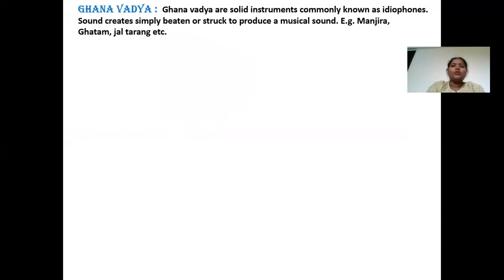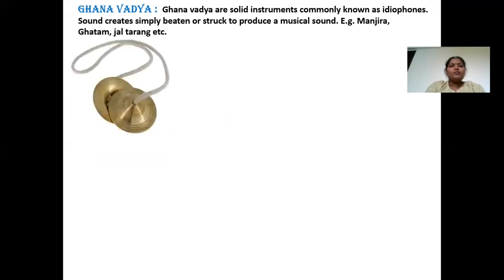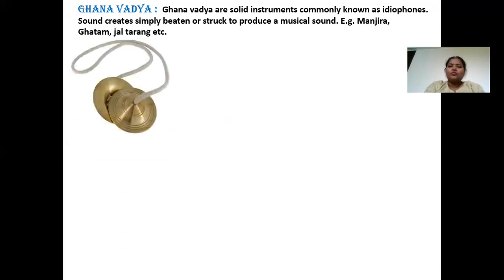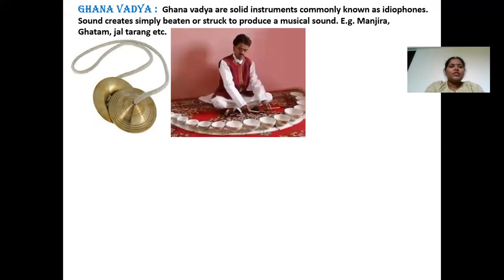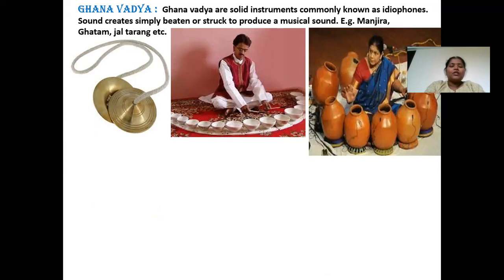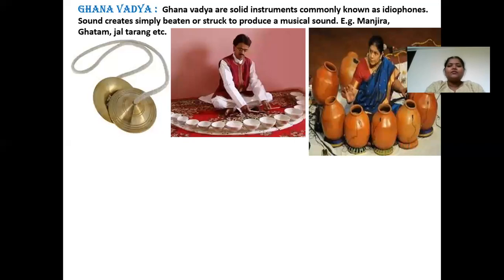The next type is ghanavadya. Ghanavadyas are solid instruments, commonly known as ideophones. Sound is created simply by being beaten or struck to produce a musical sound. Few examples are manjira, ghatam, and jaltarang. The manjira is especially used while playing a bhajan. Jaltarang is a beautiful instrument in which glass bowls are used, and those bowls are filled with water but the level of water changes in each bowl. If we strike the edges of the bowls with sticks, a melodious sound is created because of the vibrations in the water. That is why it is known as jaltarang.